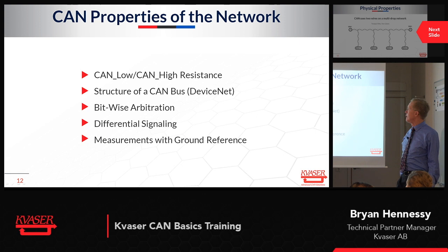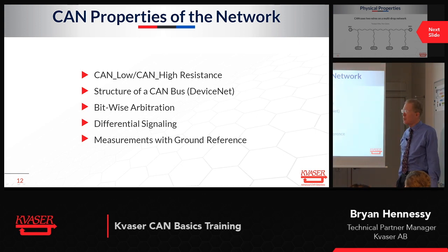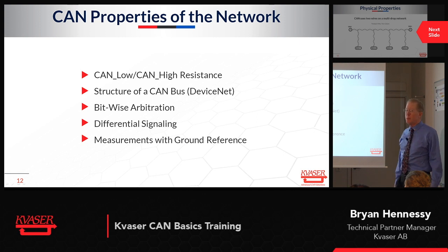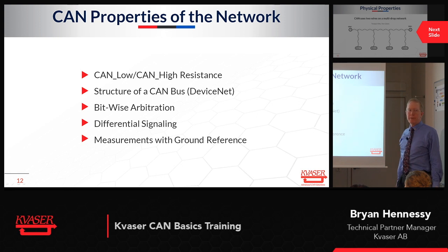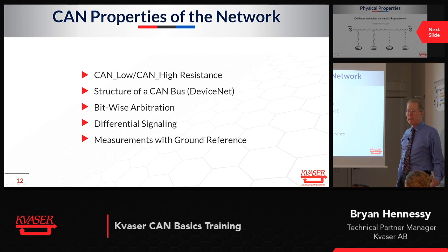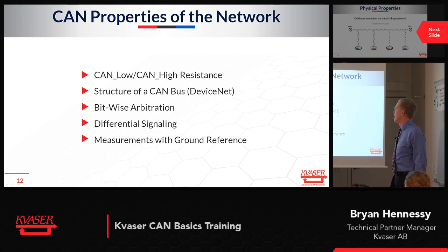CAN low, CAN high. Every CAN system, it's just two wires. A CAN network is only two wires and they're called CAN low and CAN high. These are the most generic names. Different industries might call them different things — in NMEA they use slightly different names — but CAN low and CAN high are the most common names used.